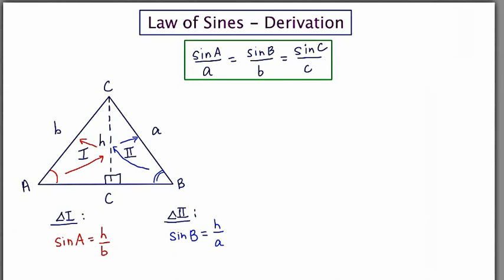In both equations, I'm going to cross multiply to solve for h. In the first, we get h equals b sine A. In the second equation, we get h equals a sine B.